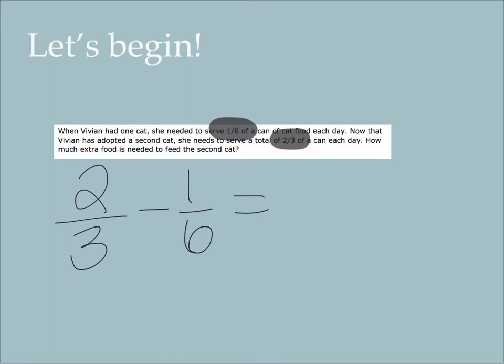The first step that I always do when I have unlike denominators is I check to see if the smaller fraction is a factor of the bigger fraction. Is 3 a factor of 6? Yes, it is. I know that 3 times 2 will give me 6. So whatever I do to the bottom, I have to do to the top. 3 times 2 will give me a denominator of 6, and 2 times 2 will give me a numerator of 4.